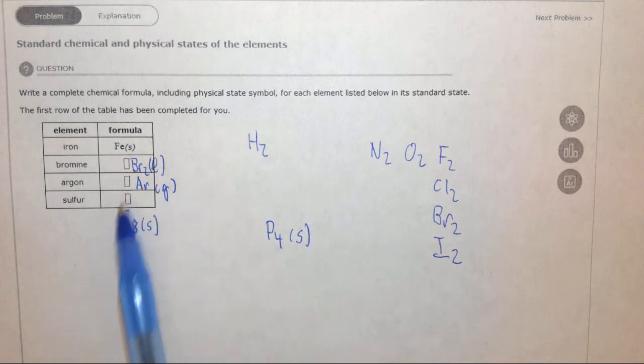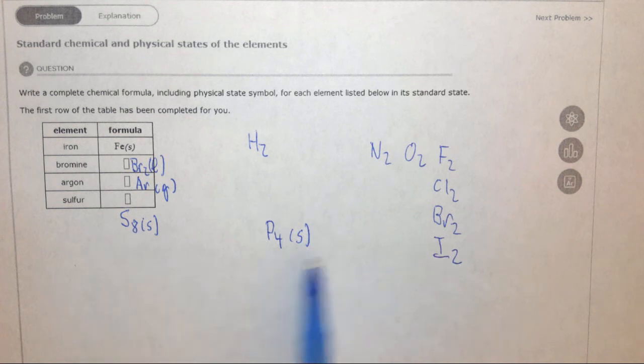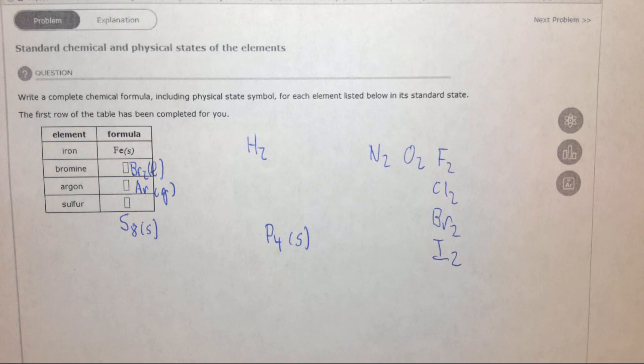So these are just elements in their standard states. If you do a Google search, you can actually find a periodic table where it'll tell you the state of matter for the different elements. You also can find periodic tables that'll tell you about S8, P4, and the diatomics with a simple Google search, or of course you can use your textbook.